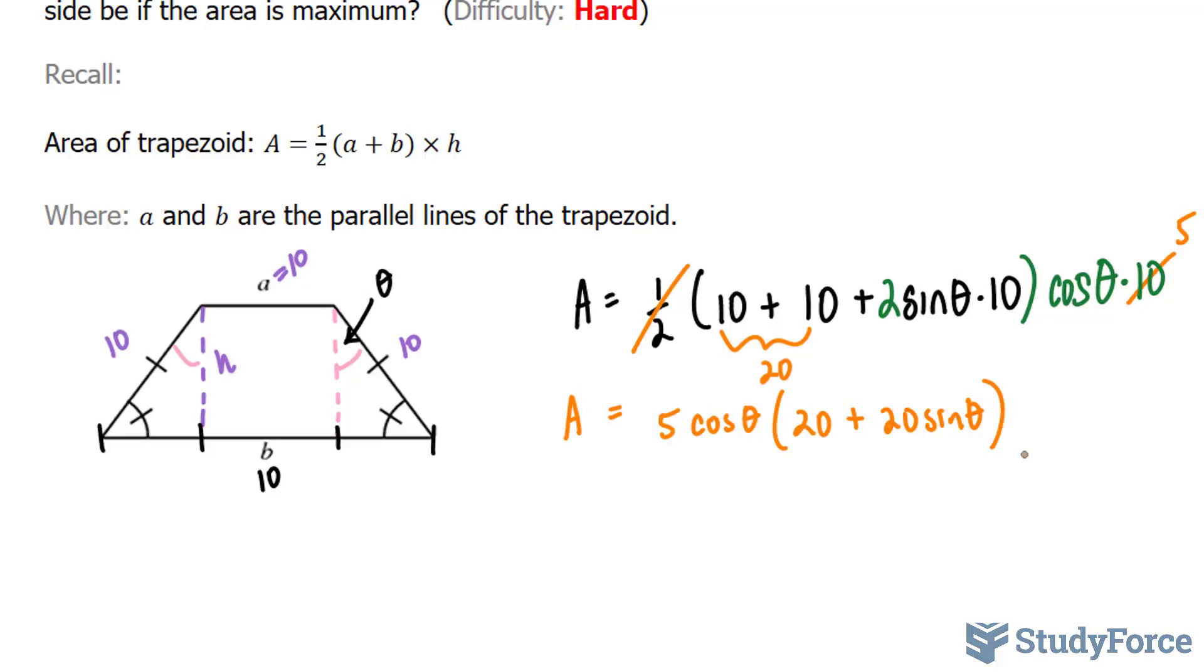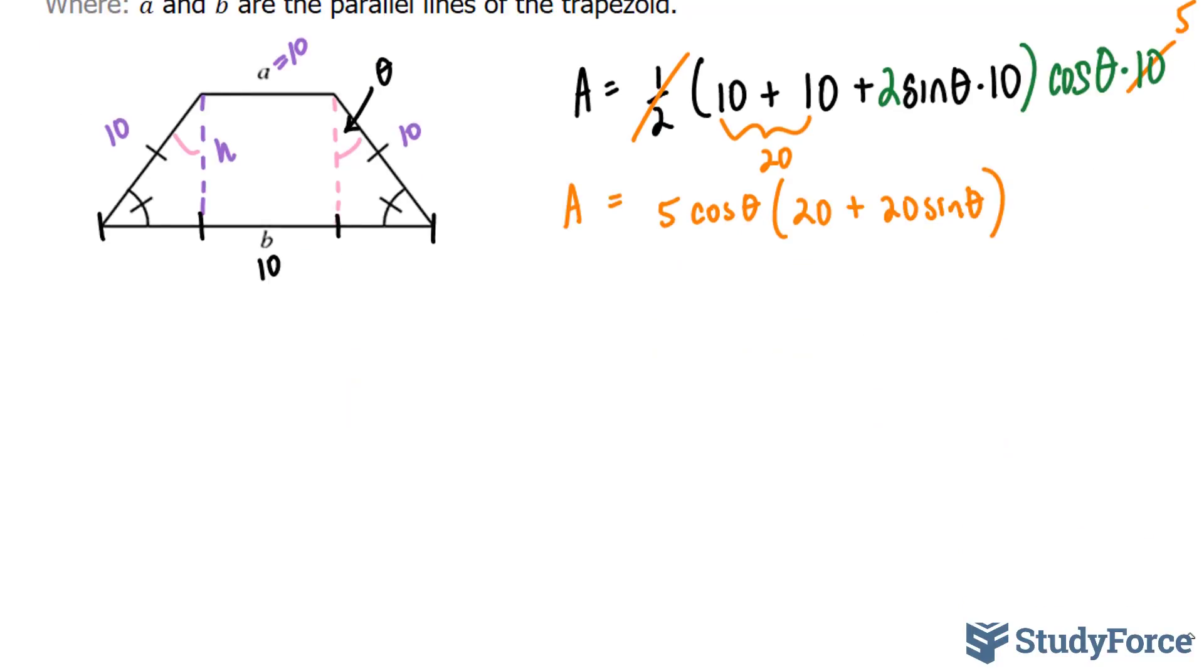The next thing that we have to do is find the critical points. Now to do that, we need to find the derivative of A, and then set A prime to 0. Then by solving for theta, we can use that to substitute back into our original equation to find out the maximum area. And we can also use that to find out the length of b.